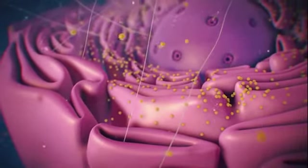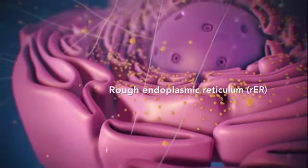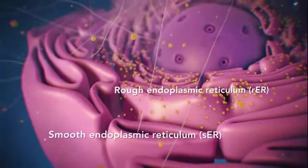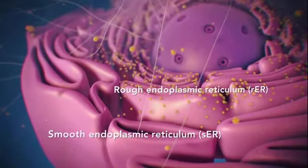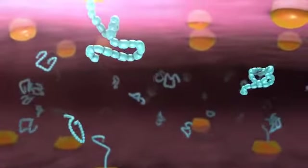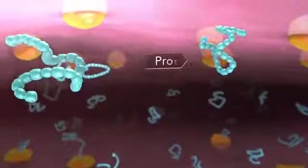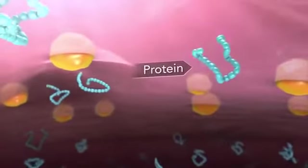There are two types of ER. Rough ER has ribosomes attached to it, and smooth ER doesn't have ribosomes attached to it. The endoplasmic reticulum is a membrane-enclosed passageway for transporting materials, such as the proteins synthesized by ribosomes.